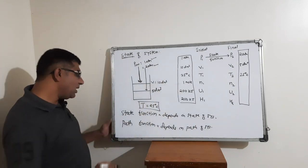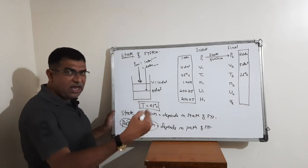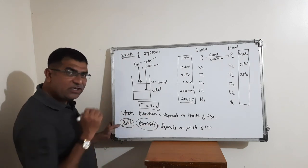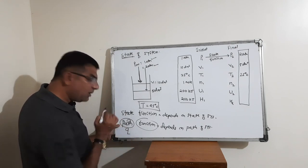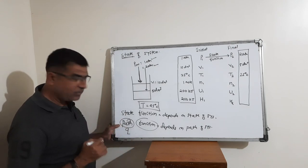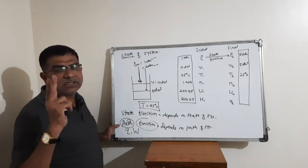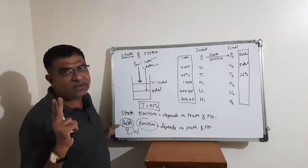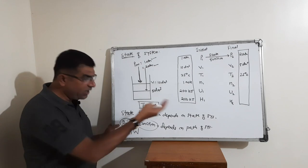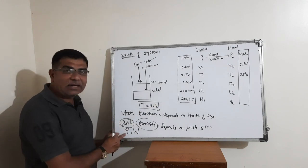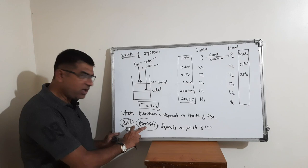The path functions in our syllabus are: number one — heat, and number two — work done. These two are path functions. All the remaining thermodynamic properties are state functions.